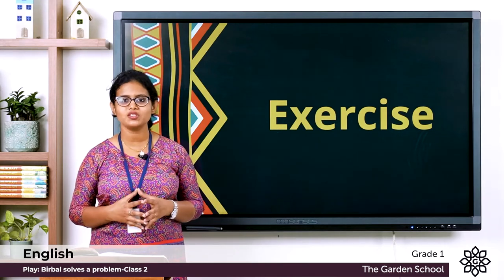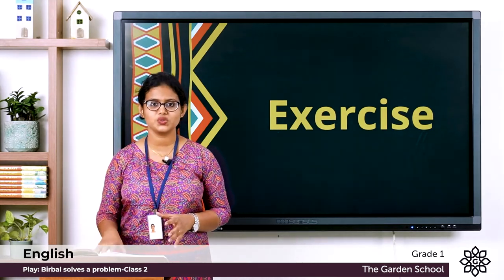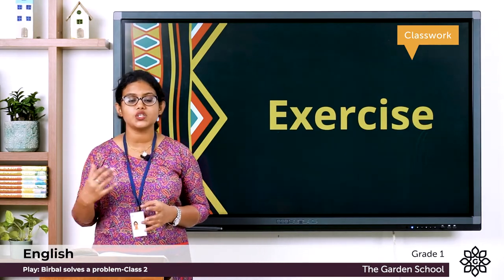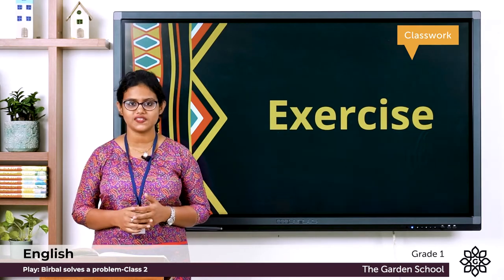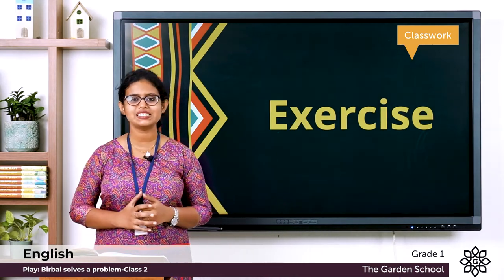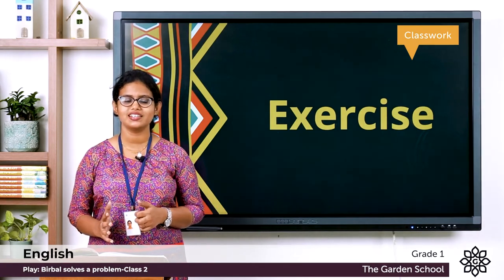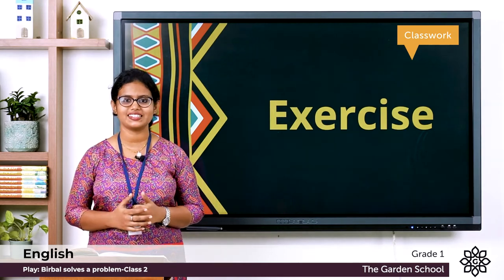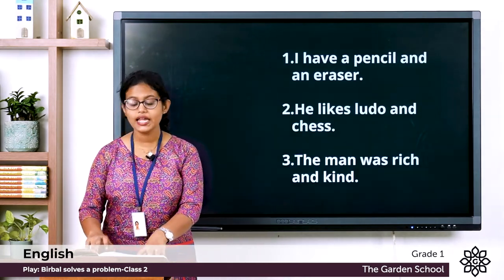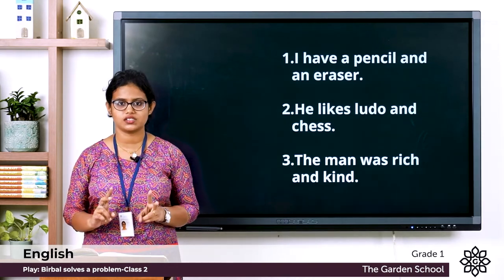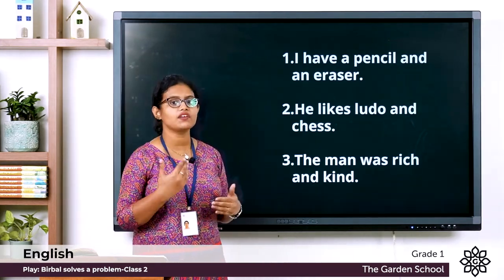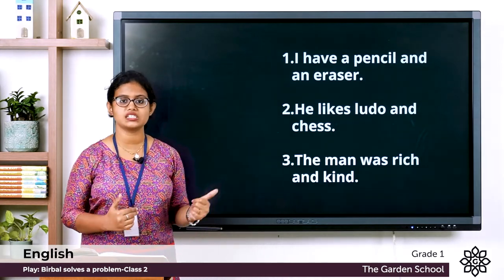I hope you all understood about joining words. Now let's do some exercise. You can take page number 95 in your textbook — join the sentences using 'and'. There are six questions. You can pause the video, write down the answers in the textbook, and once you are done let's discuss the answers. First one: 'I have a pencil' and 'I have an eraser' — joined as: I have a pencil and an eraser.